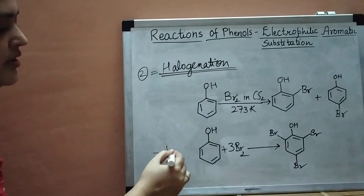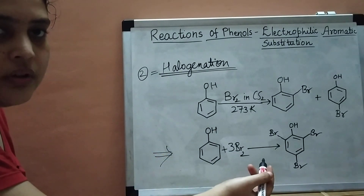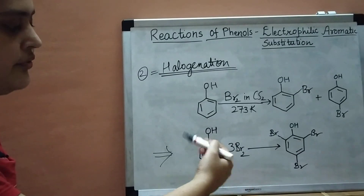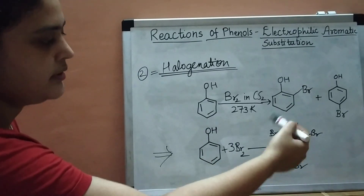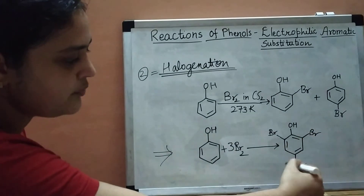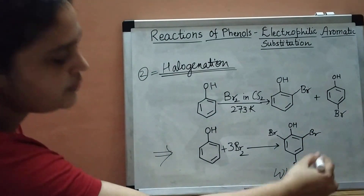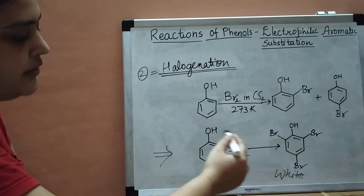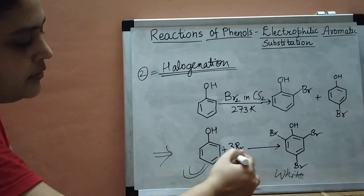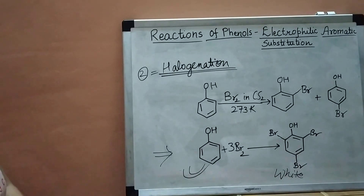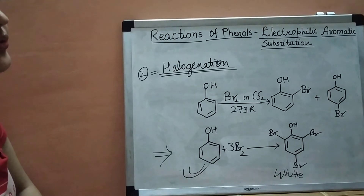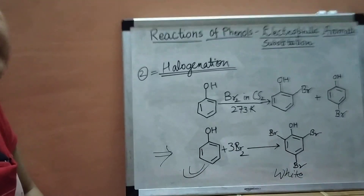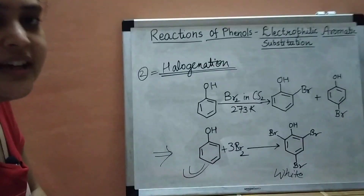This reaction — adding bromine water to phenol to get 2,4,6-tribromophenol — is used as a test for phenol in the lab. If you add bromine water and get a white precipitate, your compound is phenol. That covers the electrophilic aromatic substitution reactions of phenol.